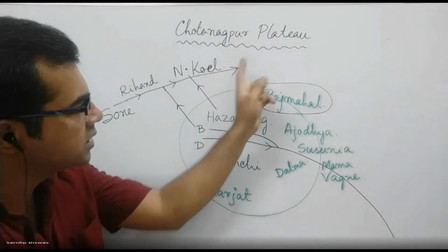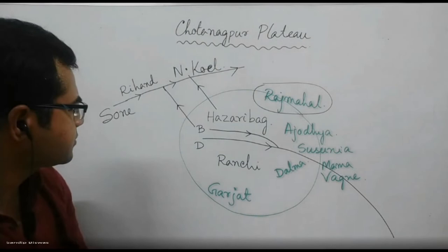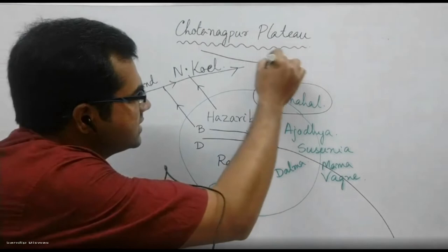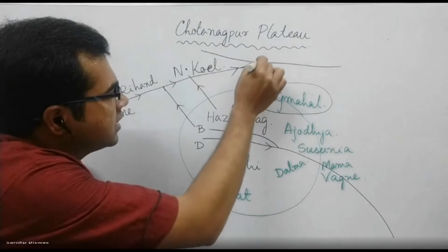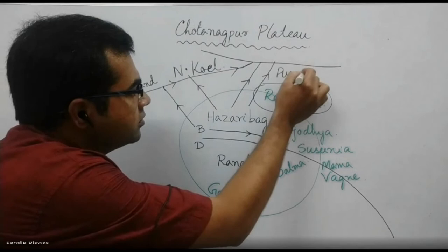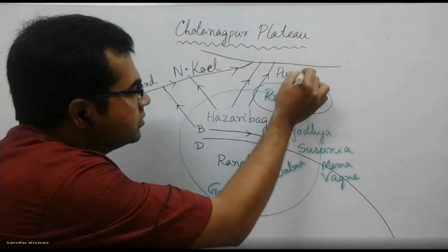We can see that Son River is a partner in Ganga. Son River is a tributary. Rihand and North Koel are important. There is a northern side of the river. This is a Ganga tributary. This river is the name of Pun Pun. This river is the name of Falgu River.